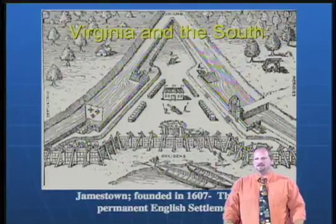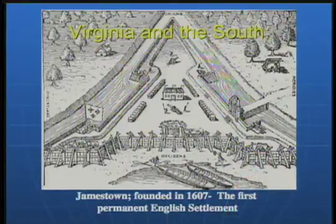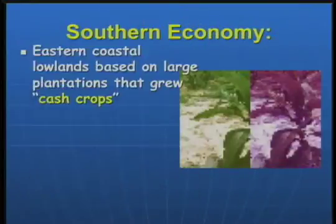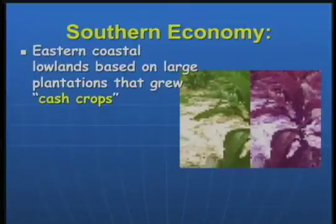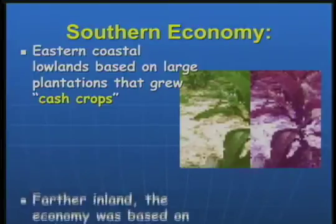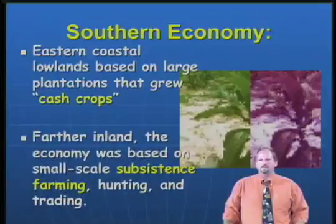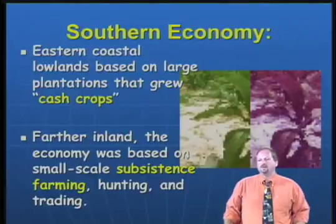When it came to Virginia and the South — remember, Jamestown was founded in 1607 as the first permanent English settlement — the Southern economy in the eastern coastal lowlands was based on large plantations that grew cash crops. A cash crop is grown not for immediate consumption but to trade for cash; tobacco was the largest, but also indigo and rice. Farther inland, the economy was based on small-scale subsistence farming, hunting, and trading with the Indians.